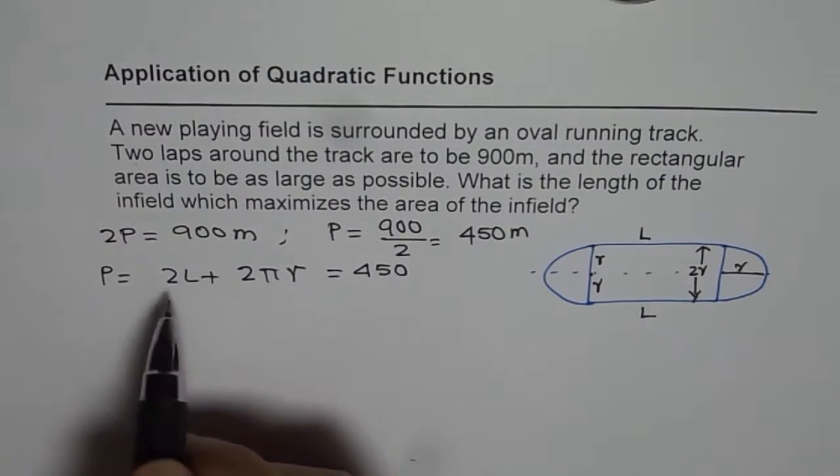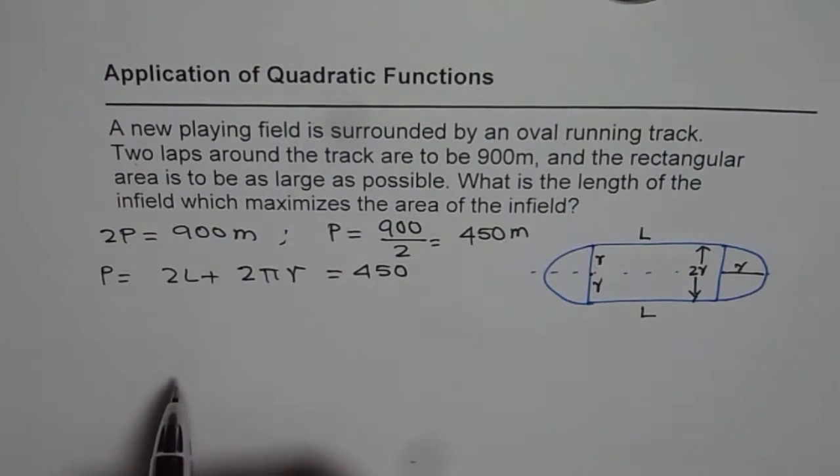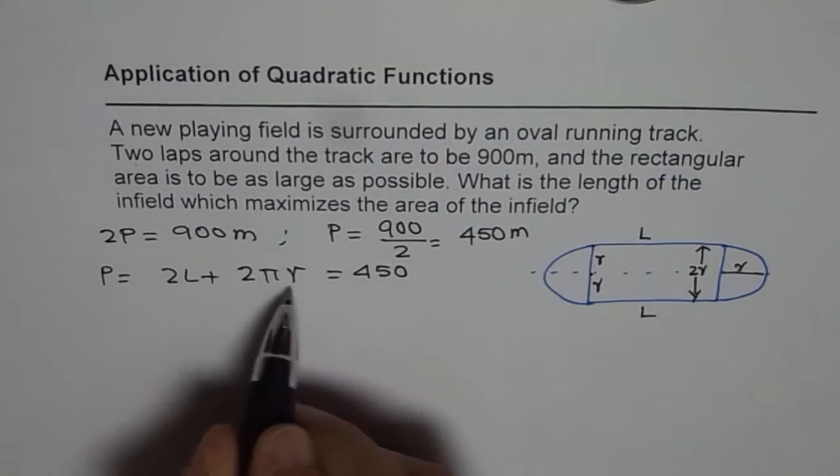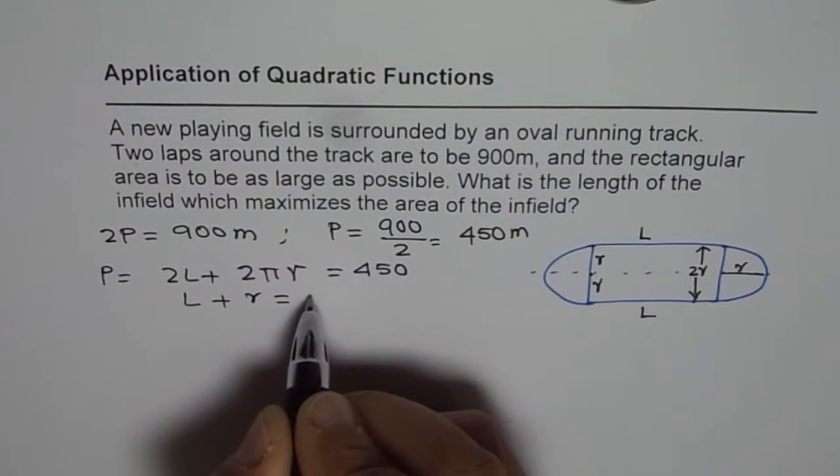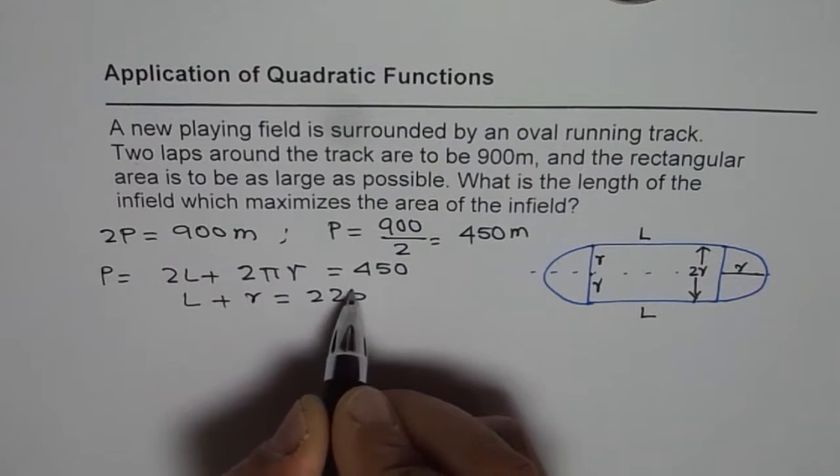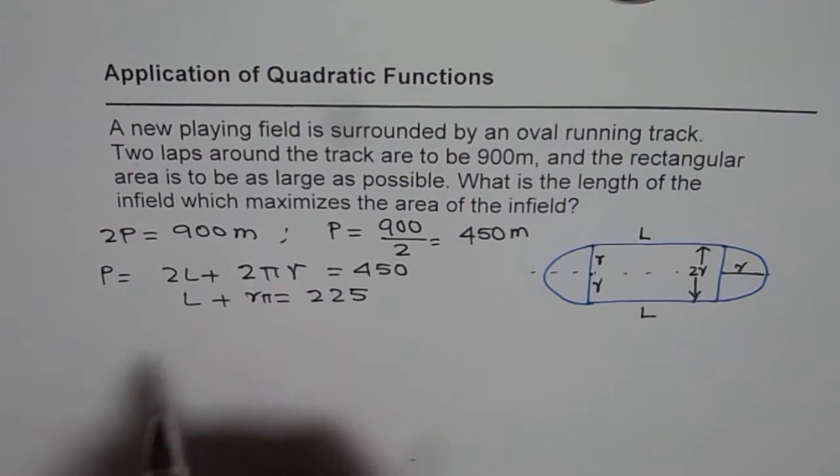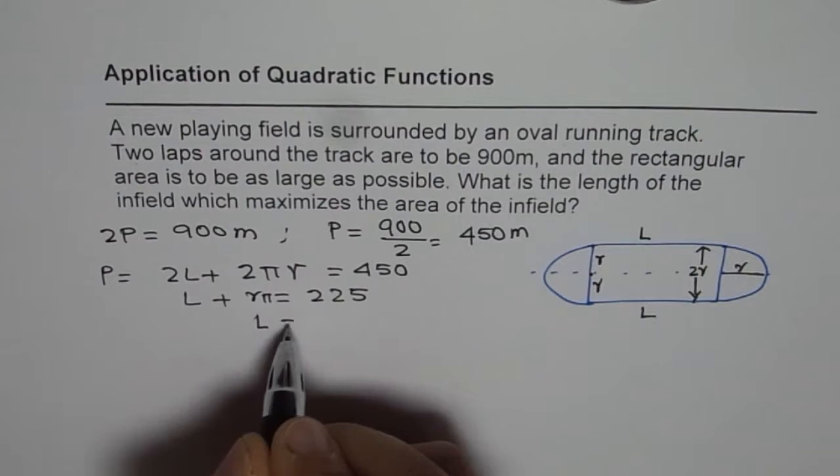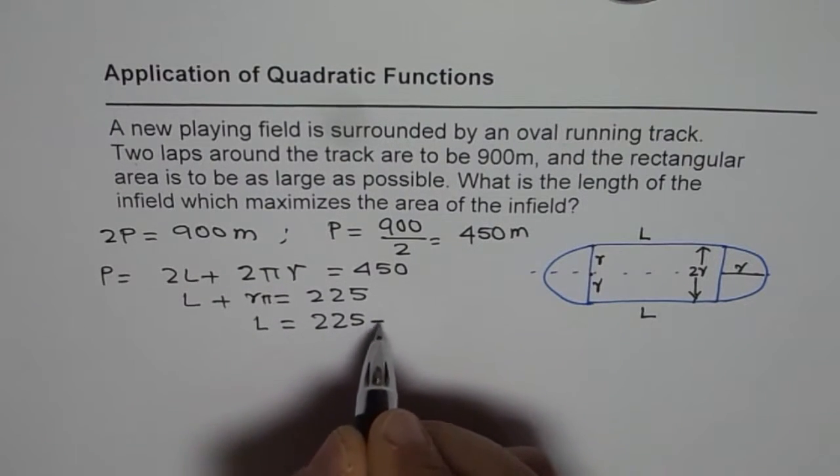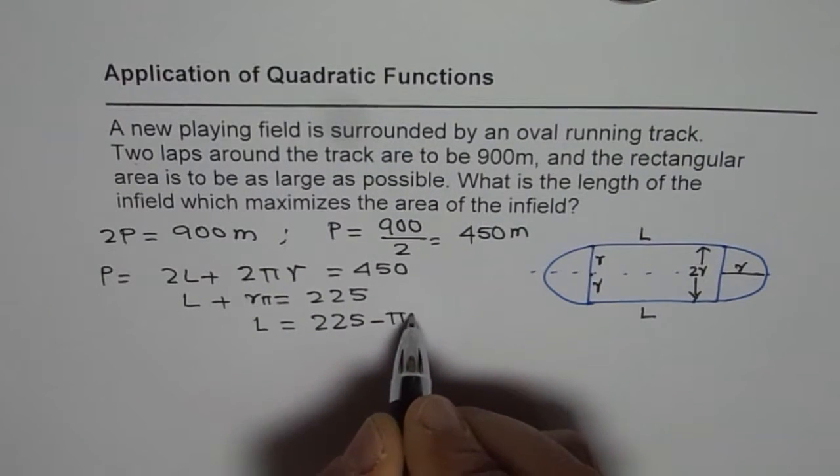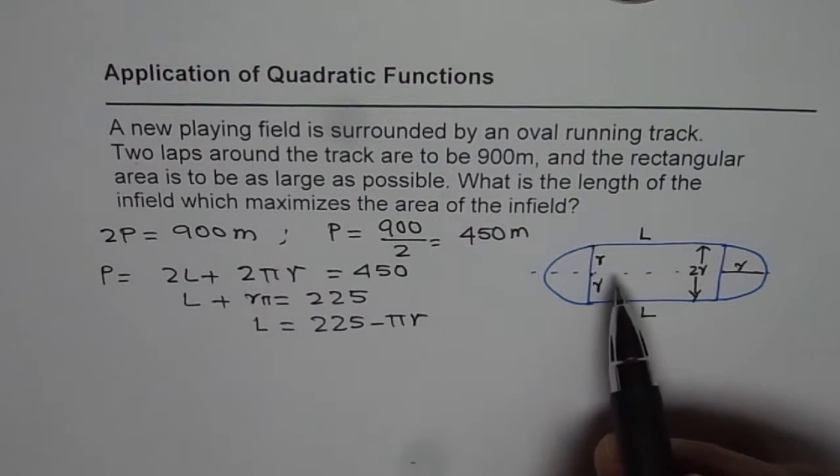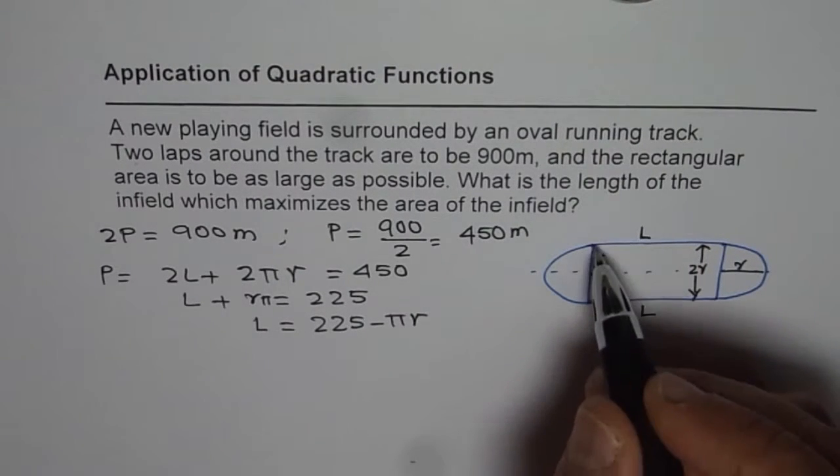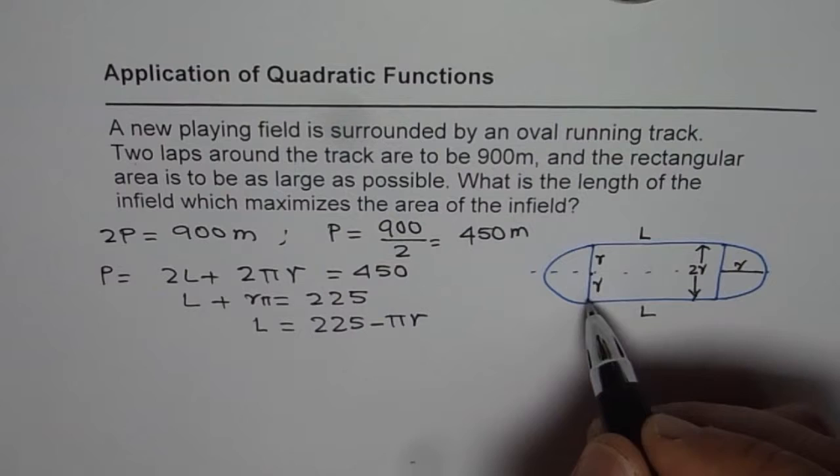So that helps to relate length with the radius. So we can divide both by 2 and then we say L plus πR equals to 225. And L is equals to 225 minus πR. So that is the relation between our variables where L is the length of the infield and 2R is the width of the infield.